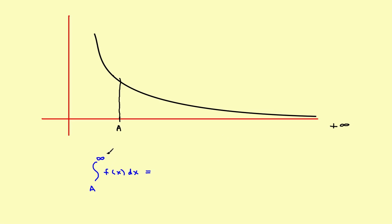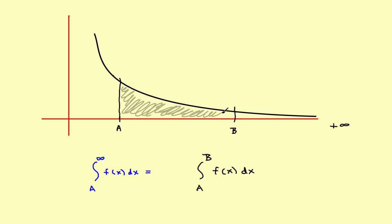The trick to these problems is this: you don't have a formula for the integral to infinity, but you do have a formula for definite integrals. So the idea is, starting at a, just pick some random point b somewhere over here. The fundamental theorem of calculus gives you the formula to find the area between a and b. If you shade that in, it would be this area, stopping right there. This definite integral gives you the integral from a to b.